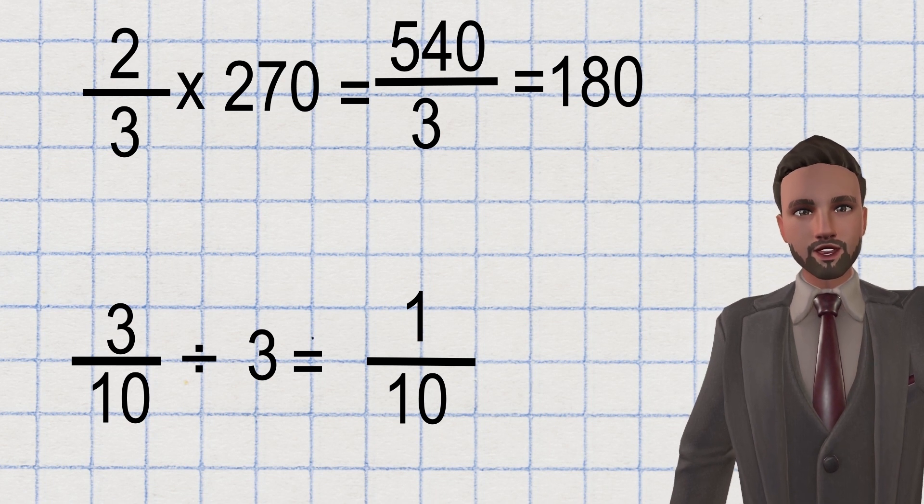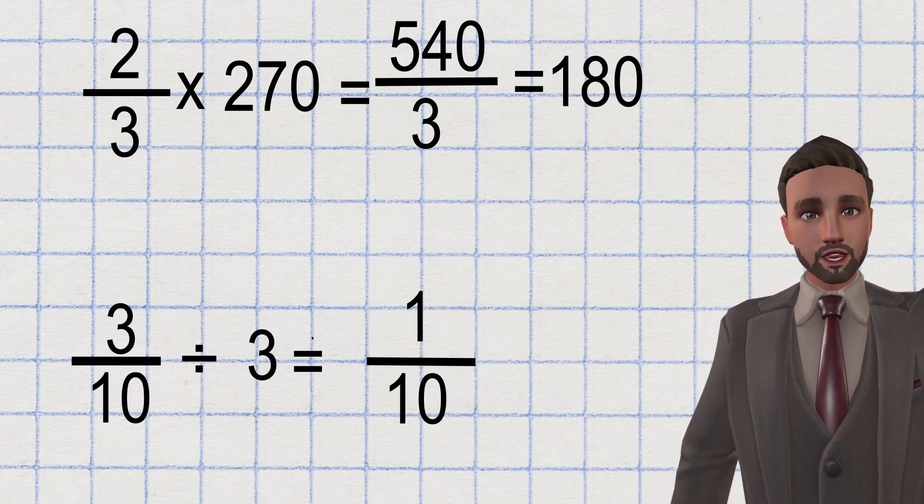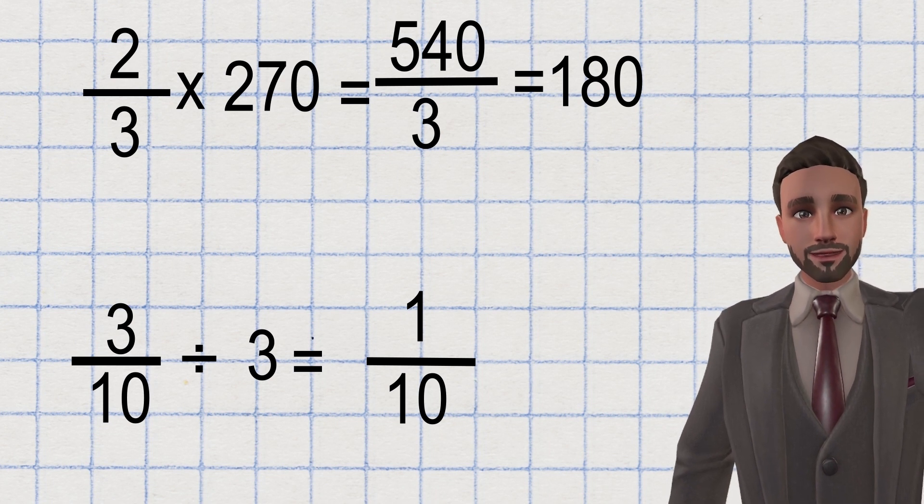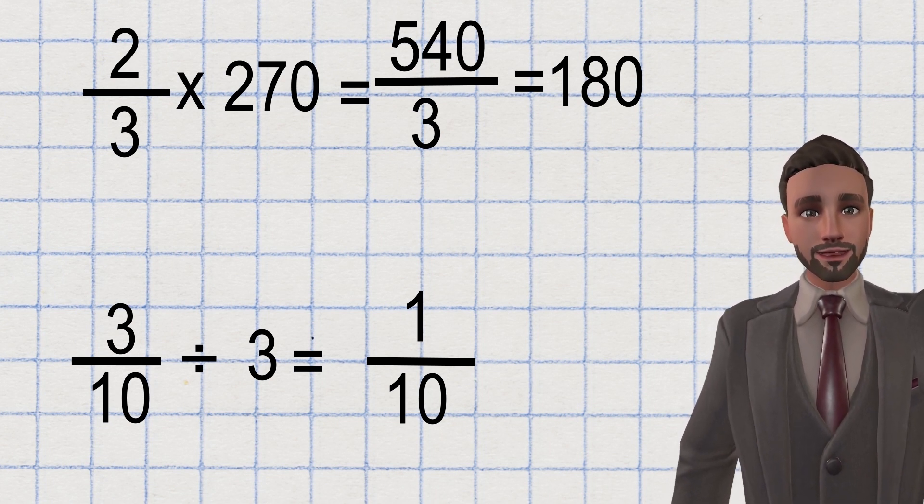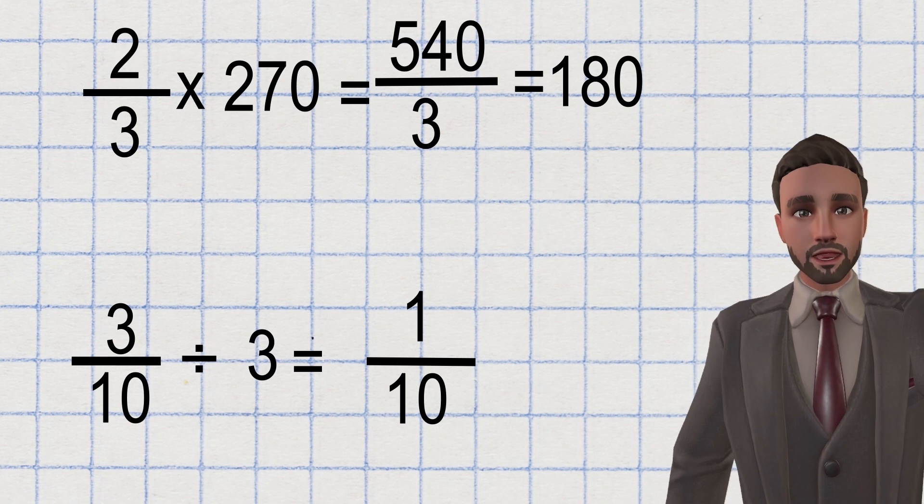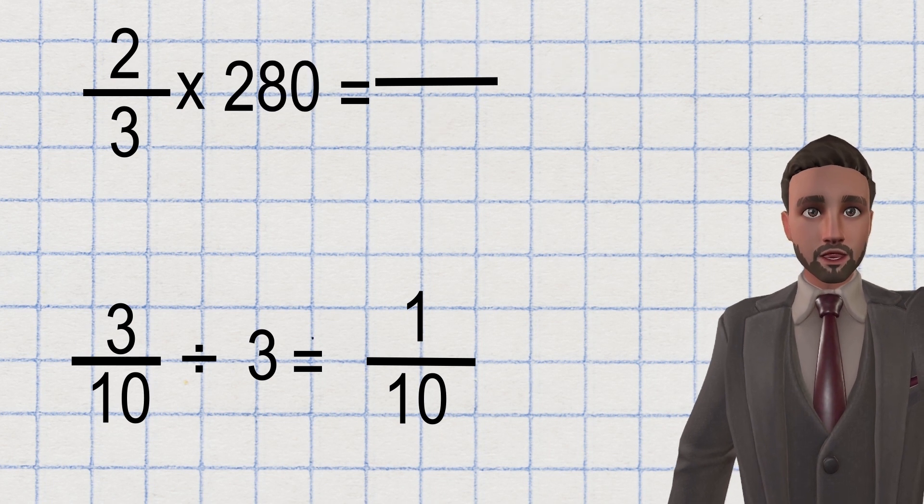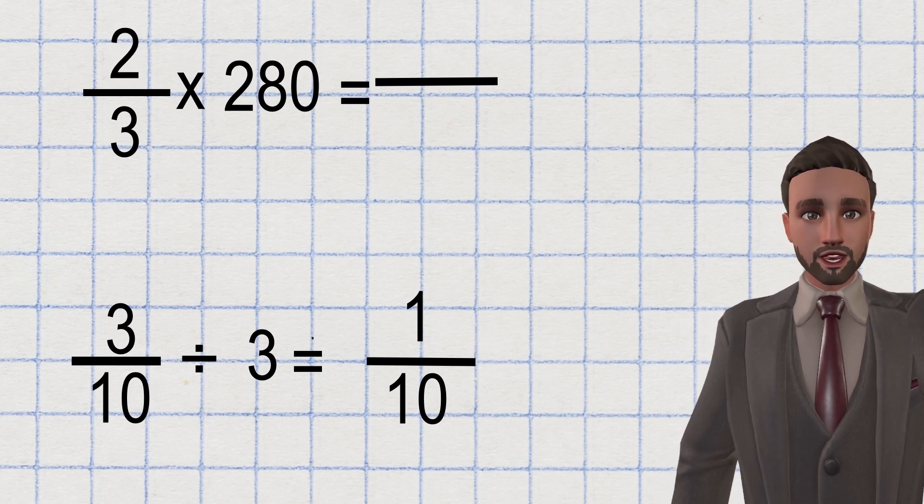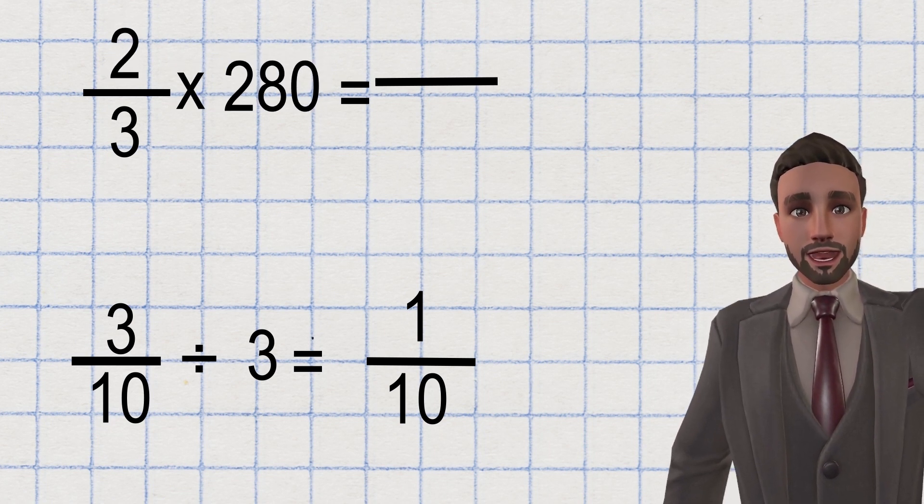When do I need to do this extra step, though? That's a good question. My advice will be to always do it unless you can't because doing it will give you an answer that has a remainder. For example, if the question wasn't two thirds times 270 and instead was two thirds times 280, I'd still do the same first step of 280 times by my parts, which is two. That would give me 560.